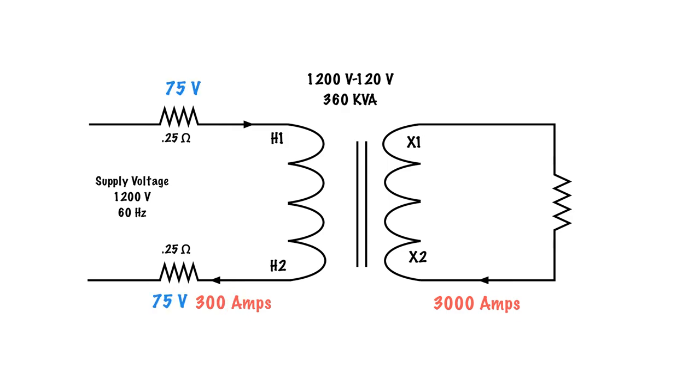Using Ohm's law, 300 amps times 0.25 ohms gets me 75 volts on that line. 300 amps times 0.25 ohms gets me 75 volt drop on the line on that side. So in total, I have 75 plus 75. I have 150 volt drop on the lines before it even gets to the winding itself.